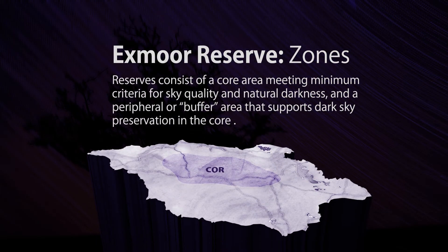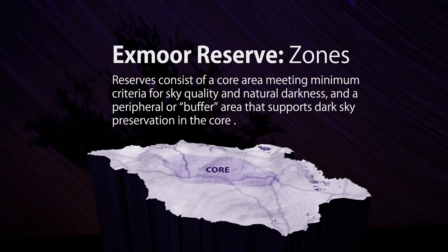Exmoor dark sky area has an inner and an outer zone. The inner zone is the core dark sky area. The outer zone basically takes in the rest of Exmoor.